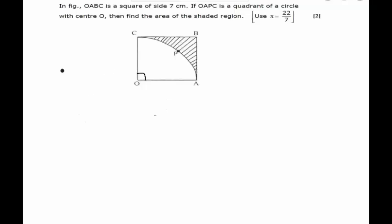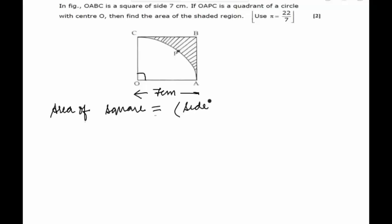First of all, we find out the area of the square. The side has already been given to us which is equal to 7 cm. The area of the square is given by the formula side squared, that can be written as OA squared, which is equal to 7 cm. So, 7 squared equals 49 cm².